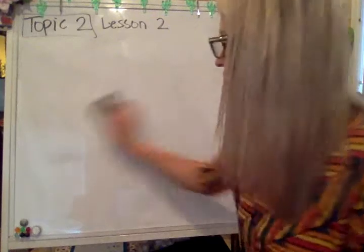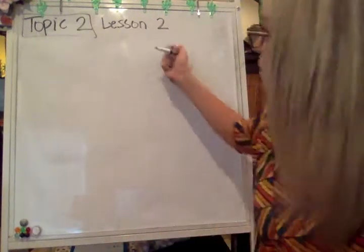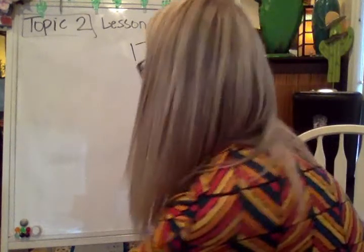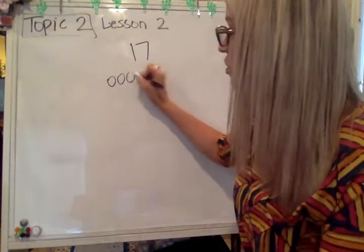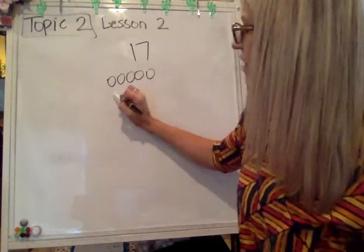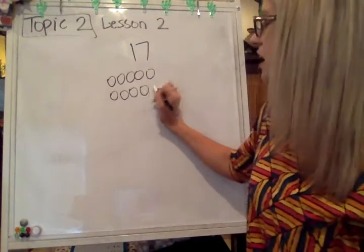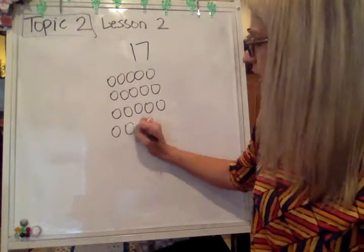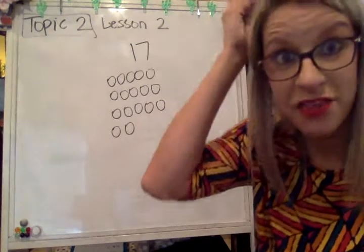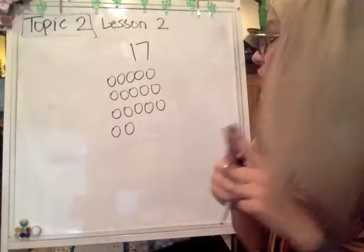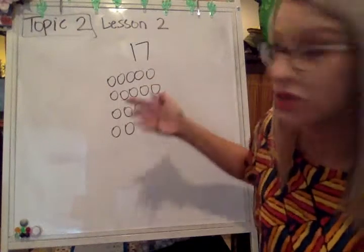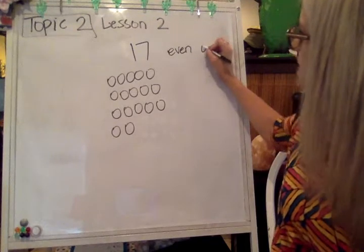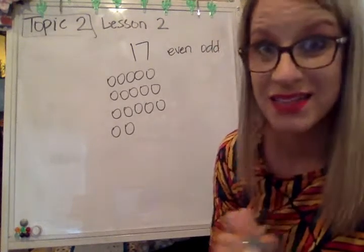Let's do another example. Let's pretend the number is 17. If I have the number 17, I'm going to try to make this a little bit neater. I'll draw 17 circles: one through seventeen. Remember, a pair is a group of two — see if I have any leftovers. If I have leftovers, it means it's odd. If everything works out and there's nothing left out, that means that it is even.